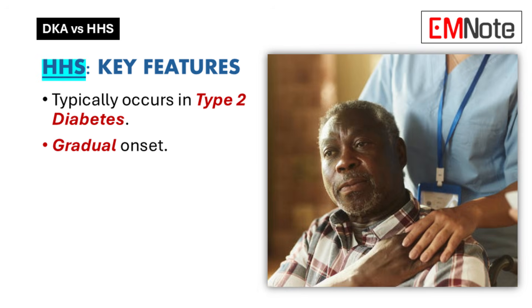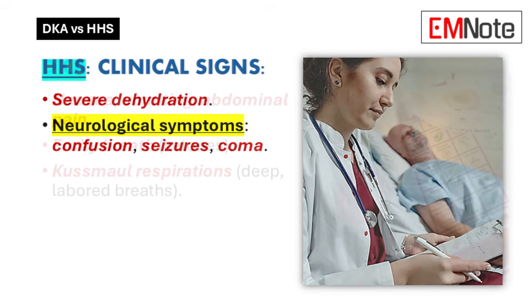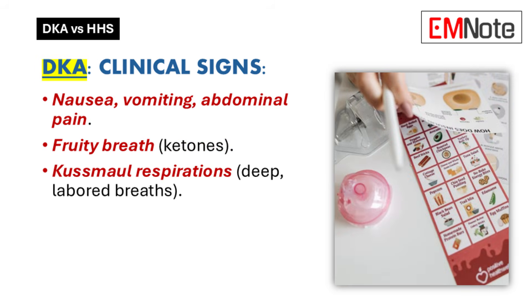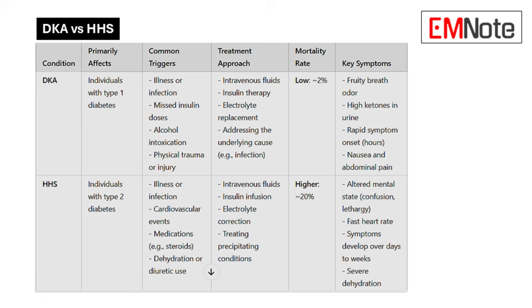Because of that severe dehydration in HHS, the presentation differs significantly from DKA. With HHS you'll often see neurological symptoms — confusion, drowsiness — that can even progress to seizures or coma, because the brain is particularly vulnerable to dehydration. So while DKA presents with gastrointestinal and respiratory symptoms, HHS requires vigilance for neurological signs, which can be subtle, especially early on.